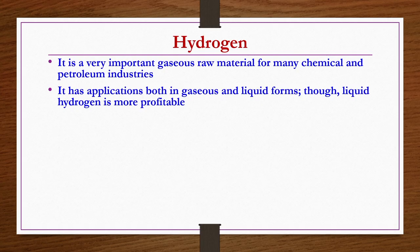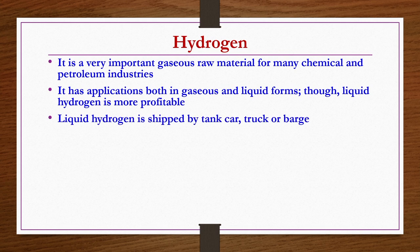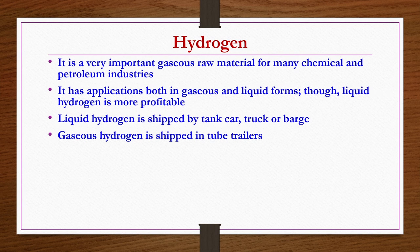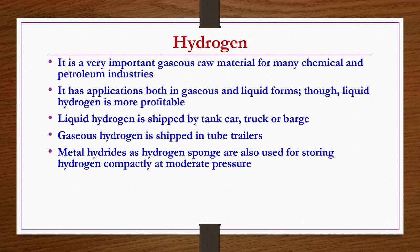Hydrogen has applications in both gaseous and liquid forms, but production and subsequent storage in liquid form is more profitable from the industry point of view. Liquid hydrogen is shipped by tank truck or barge, while gaseous hydrogen is shipped in tube trailers. Metal hydrates are used as a hydrogen sponge for storage, allowing compact storage at moderate pressures, since hydrogen is very dangerous to store at very high pressures.